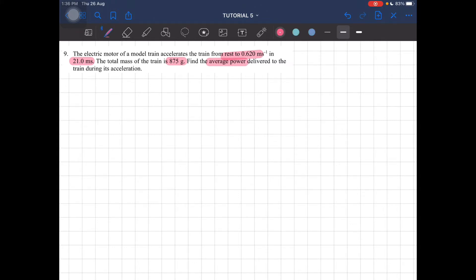Okay, so we know that power is equal to delta W over delta t. However, we do not have the value of work; we only have the time, which is equal to 21 milliseconds. So now we have to find delta W.